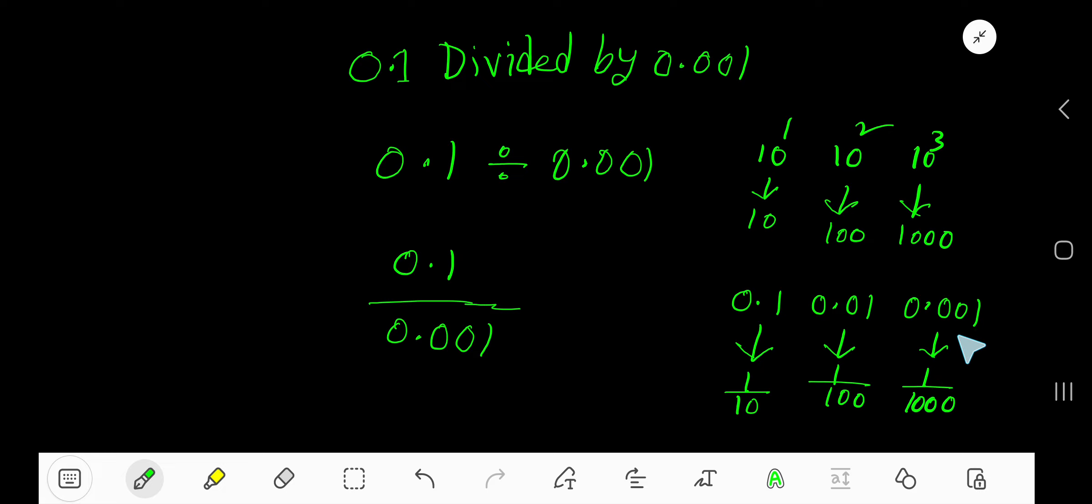...are less than 1. So if you want to divide a decimal by a power of 10 which is less than 1, just count the number of places after the decimal: 1, 2, 3. So the decimal point will move to...